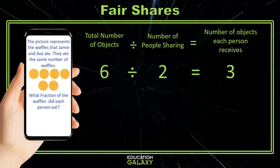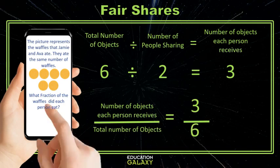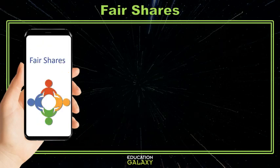Three. To make our fraction, we use that three as our numerator and the total number of waffles as the denominator, six. So our answer is three sixths. And that, my friends, is how we calculate fair shares.